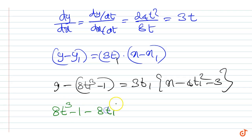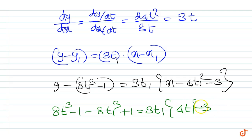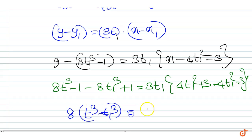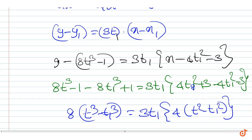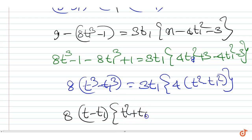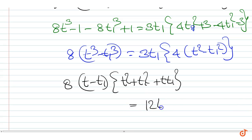Or we can write 8t cubed minus 1 minus 8t1 cubed plus 1 equal to 3t1 into 4t squared minus 4t1 squared minus 3. Simplifying we get 8 times t cubed minus t1 cubed equal to 12t1 into t squared minus t1 squared. That is, 8 into t minus t1 times t squared plus t1 squared plus t times t1 equal to 12t1 into t minus t1 into t plus t1.